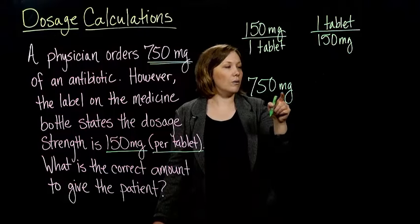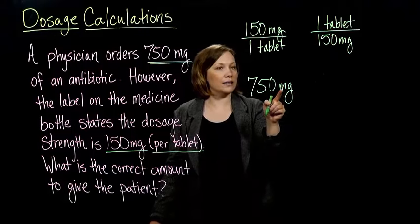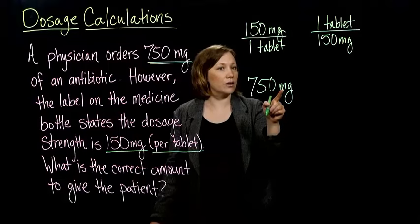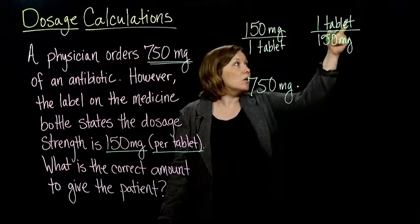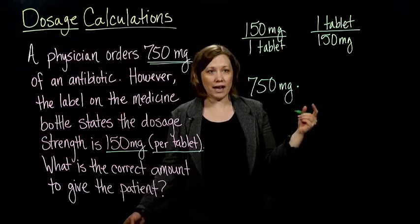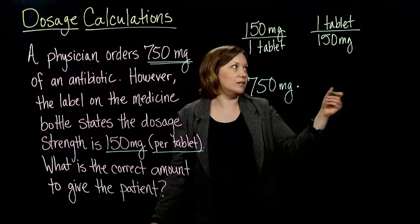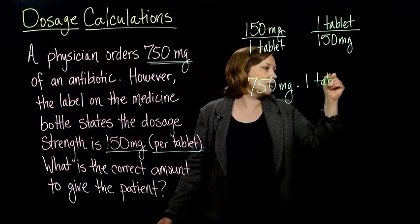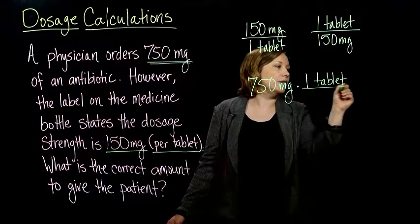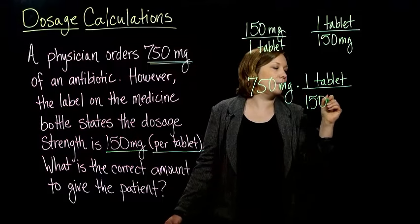Well, if you look, what do I want to cancel out? I want to cancel out the milligrams. So what's already on the top? The milligrams. So I need milligrams on the bottom. Also, I want tablets on the top because I want to end up with tablets in the end when I'm all done. So I'm going to multiply by the second one that I have where the tablets are on the top and the 150 milligrams are on the bottom.